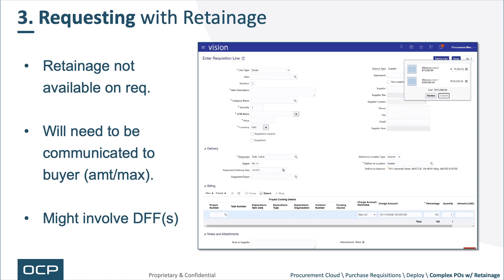Next, requesting with retainage is a bit of a challenge. You can see here a couple of milestones added to a project, but retainage is not available on the requisition. So it will need to be communicated to a buyer — communicated means amount or max. It might involve some DFFs, descriptive flex fields, just because that communication vehicle isn't currently on the requisition.